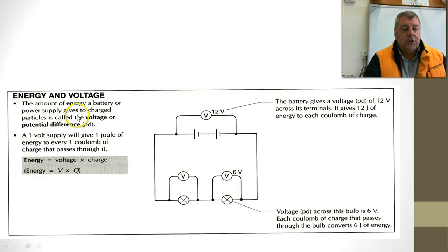So what's the relationship between energy and voltage? The amount of energy that's being given to the particles is called the voltage or the potential difference. Same thing, different name. The more voltage you have, the more energy the charge is being given. One volt supply will give one joule of energy to every one coulomb of charge. A joule is a measure of energy.